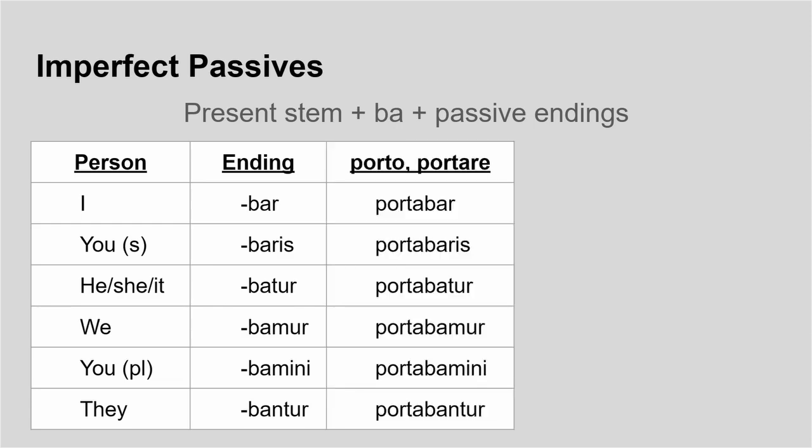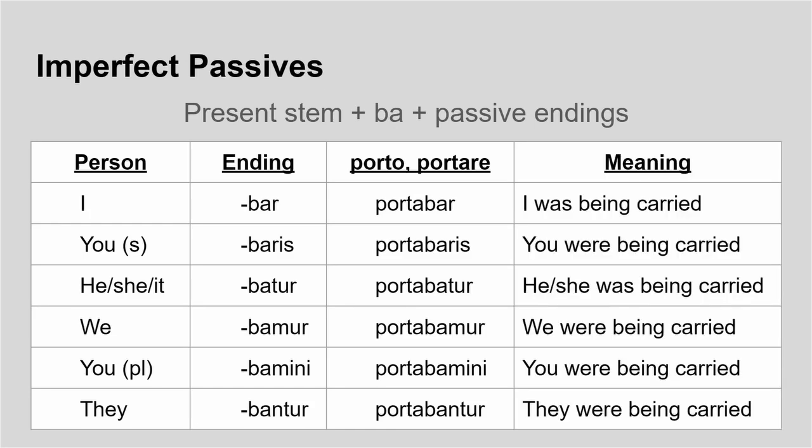For example, if I take porto — my classic example — the full conjugation is: portabar, portabaris, portabatur, portabamur, portabamini, portabantur. They all mean: I was being carried, you were being carried, he/she/it was being carried, we were being carried, you were being carried, and they were being carried.